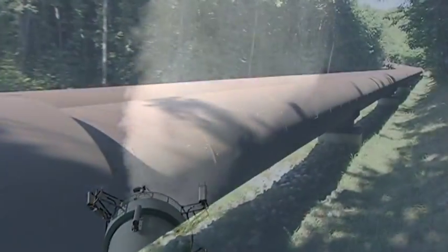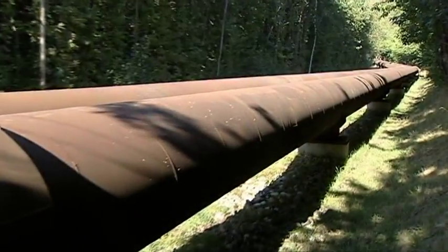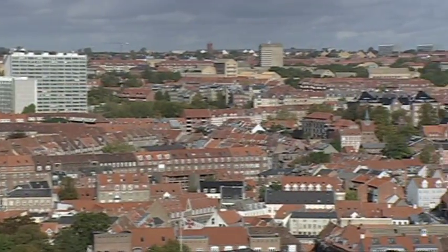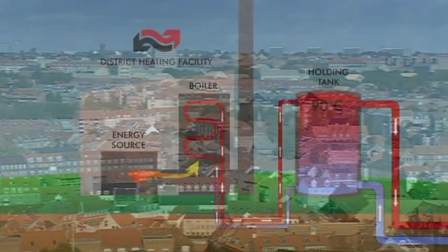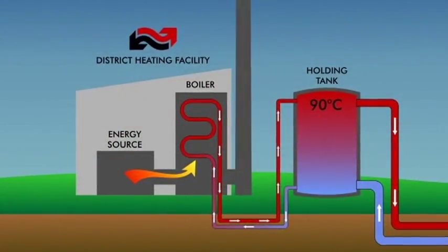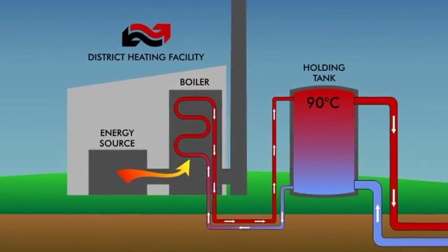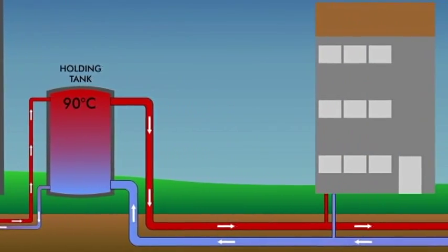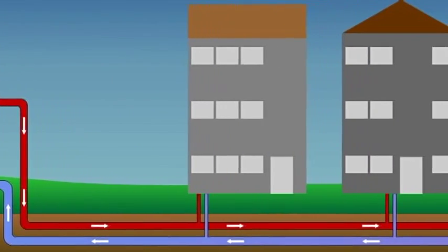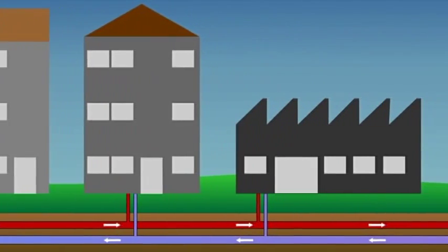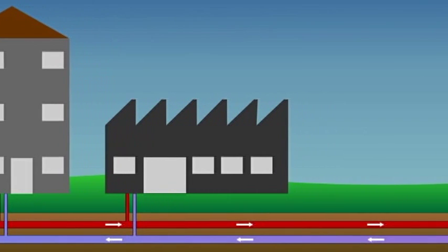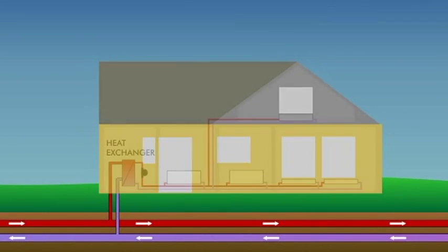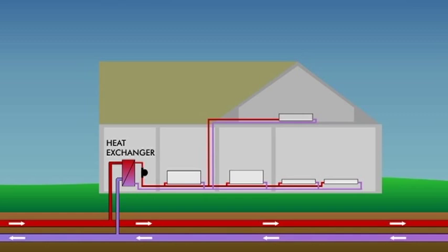District energy transfer networks are the most efficient way of providing district heating or cooling to many buildings in an urban area. Instead of each building having its own heating or cooling plant, they're served with hot or cold water from central facilities, giving scale of magnitude savings and security of supply, and substantially reducing emissions and environmental impact.